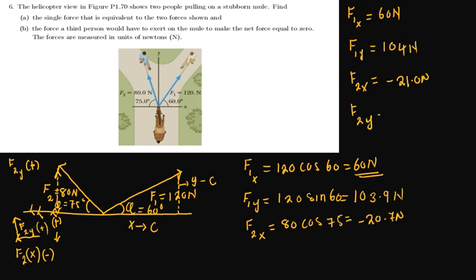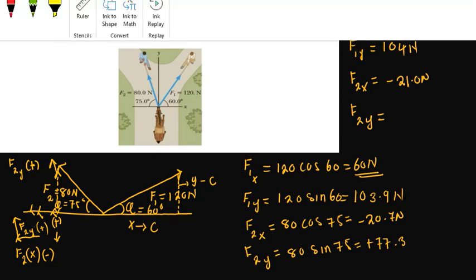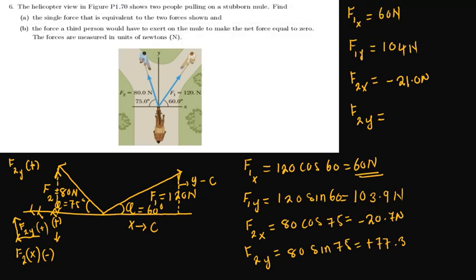F2y equals 80 sine 75, which is positive 77.3 Newtons — positive because it moves upward. So F2y equals positive 77.2 Newtons.